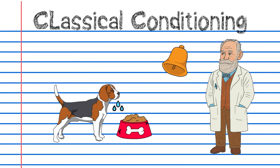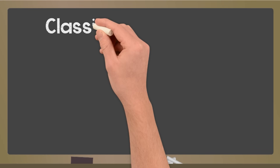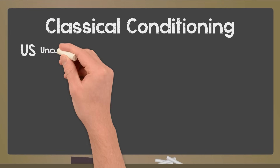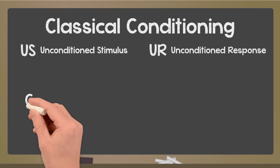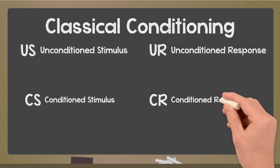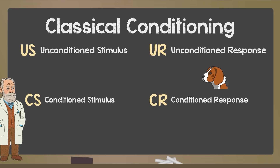After doing this several times, he rang the bell without giving food — and the dog still drooled. To really understand classical conditioning, we need to know four key terms. These show up in every example, so let's walk through them using Pavlov's original experiment.